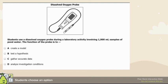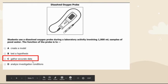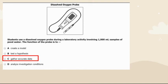This is a dissolved oxygen probe question — a classic test-taking question where you might not know what it does, and that's okay. Any type of tool or technology is going to be used to help gather the most accurate data. You'll use that data to analyze results, create models, and test a hypothesis. Any specifically mentioned technology is used to gather the most accurate data possible.